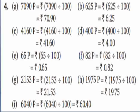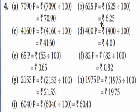Question number four: convert each of the following into rupees. Yahan par paise given hain, rupees mein convert karna hai. Part a: 7090 paise — divide by 100, quotient rupees aur remainder paise hoga. Symbol of rupees use karenge — 70 rupees and 90 paise, so rupees 70.90. Part b: 625 paise — 625 divide by 100 = rupees 6.25, meaning 6 rupees 25 paise.